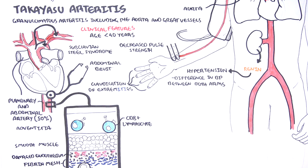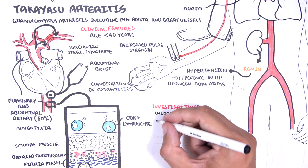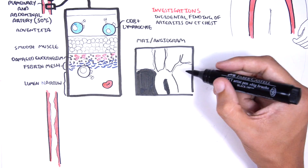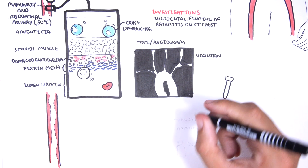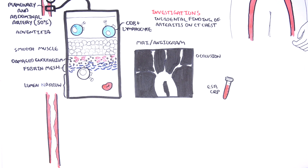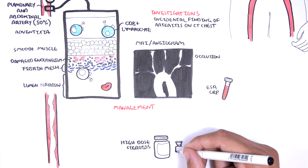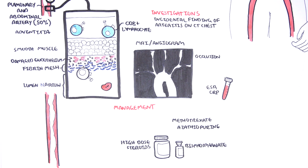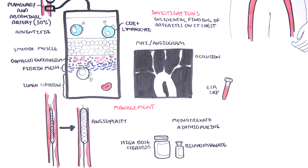Biopsy of the large vessels is impractical and not routinely done. Features of Takayasu arteritis are often incidentally found on CT. Diagnosis rests largely on clinical findings with the help of imaging — angiography such as MRI angiogram showing areas of stenosis along the aorta and its branches — and laboratory studies such as raised ESR and CRP to support the diagnosis. Glucocorticoids are first-line treatment; however, in steroid-resistant disease, alternatives such as methotrexate, azathioprine, and mycophenolate may be given. Angioplasty can also help in symptomatic relief, where an endovascular wire with a balloon is used to widen the artery and improve blood flow.